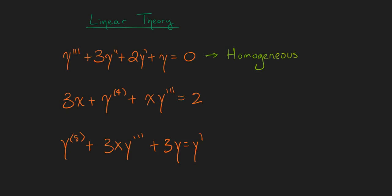In the second case—this is equation one, two, and three—this is written a little bit strangely. We can write it more conveniently. We have y to the fourth derivative, and then plus xy triple prime is equal to 2 minus 3x.